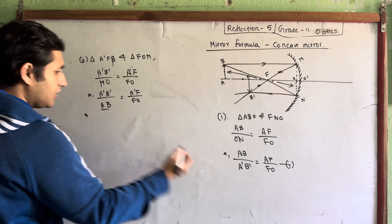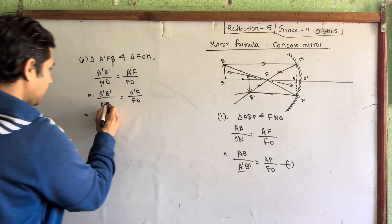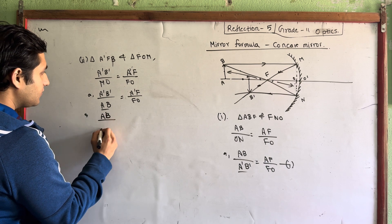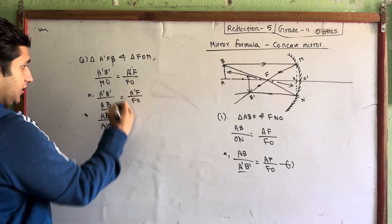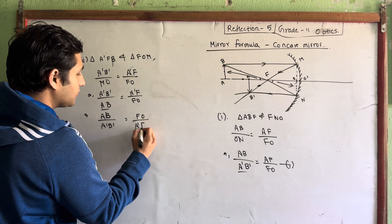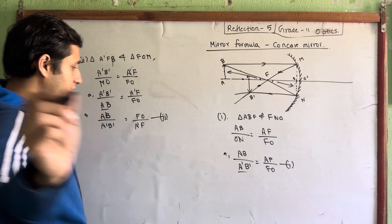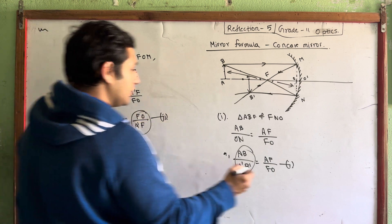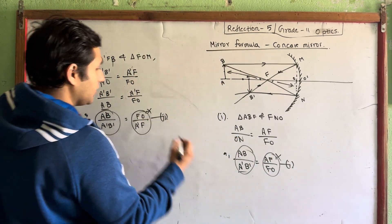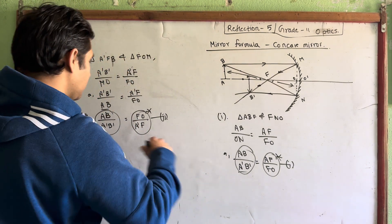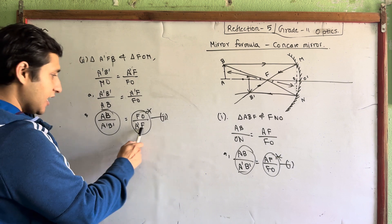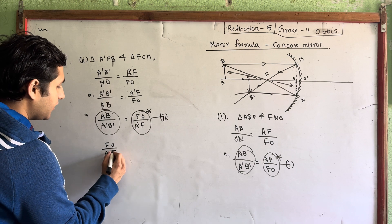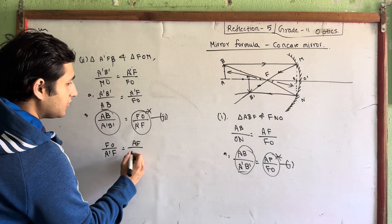Now we have to set up this equation. Let's do this in the general rule with LHS and RHS. In the general rule, FO upon A-dash-F is equal to AF upon FO.